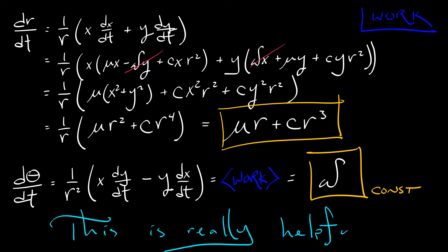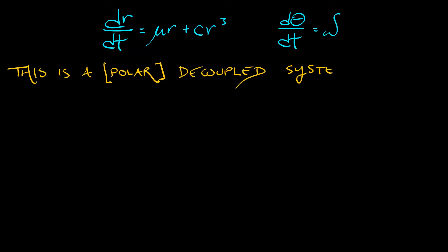Now, this is really, really helpful. And why is that? Well, take a look. Take a look at this system that we have derived in polar coordinates. This is a decoupled system. dr dt doesn't depend on theta. d theta dt doesn't depend on anything. It's a constant. So what that means is that we can analyze this very, very easily.